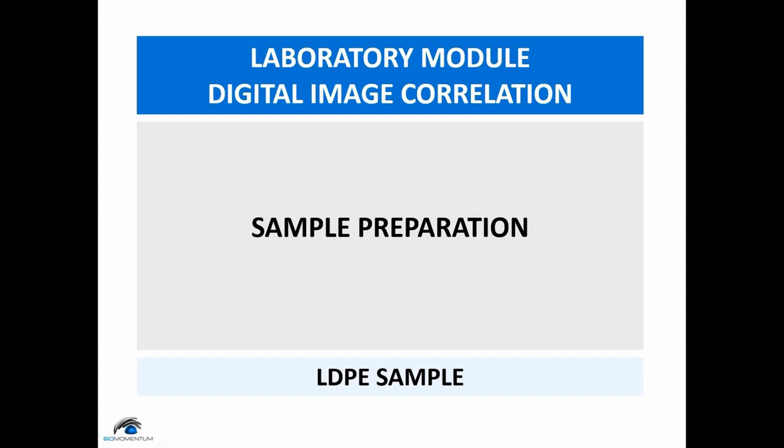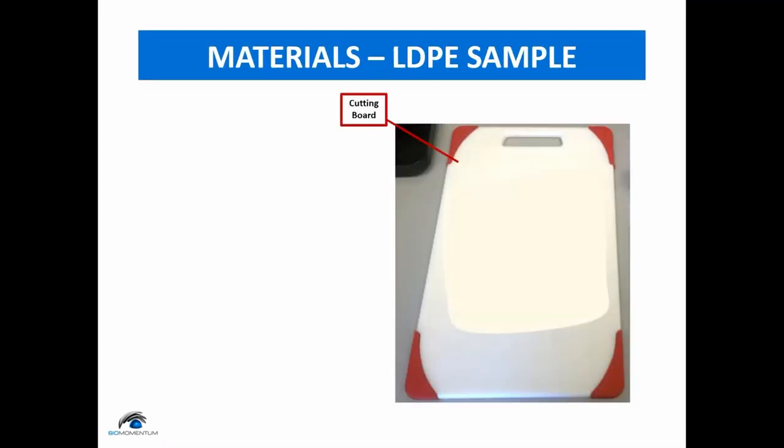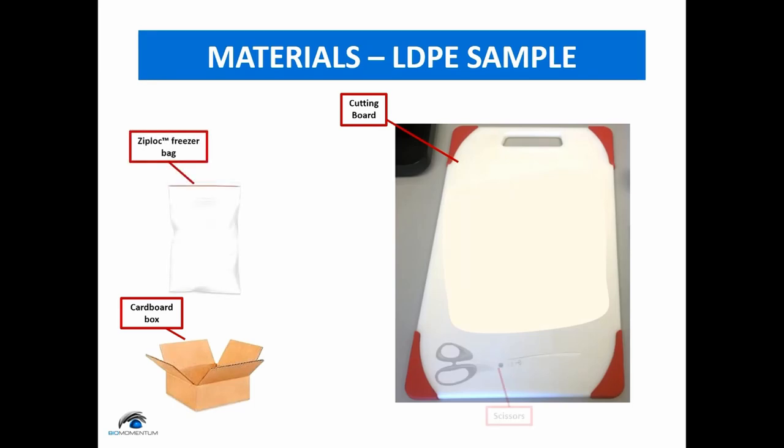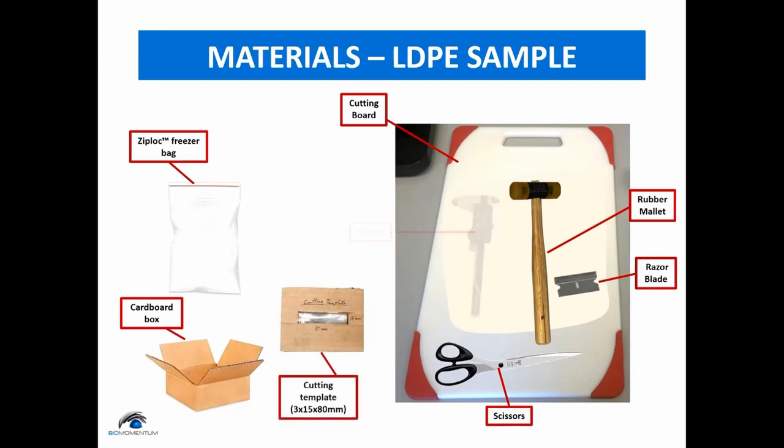We will first prepare the LDPE sample. For its preparation, we will be using a cutting board, an empty cardboard box, a ziplock freezer bag, scissors, a rubber mallet, a razor blade, a cutting template, a caliper, and a black oil-based spray paint.